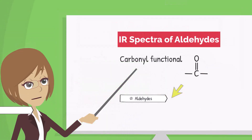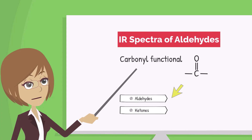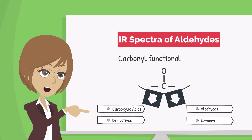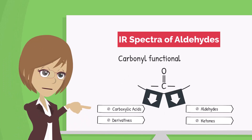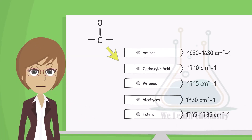Carbonyl functional group is characteristic of aldehydes and ketones, and it also exists in many other compounds, including carboxylic acids and their derivatives. The carbonyl group shows unique absorption in the infrared spectrum of each compound.